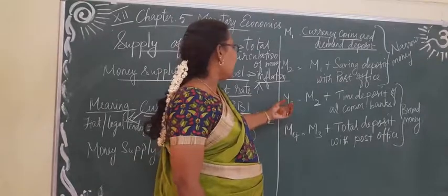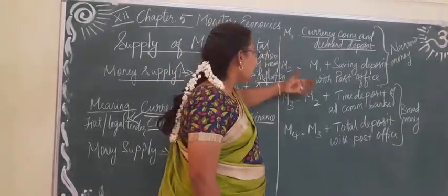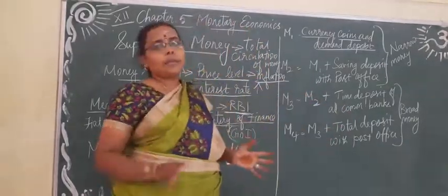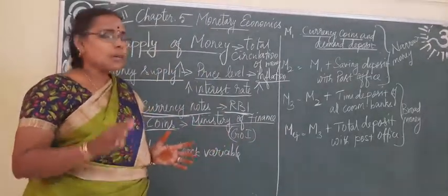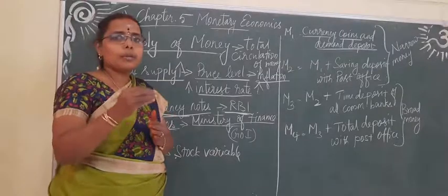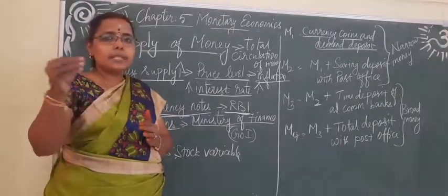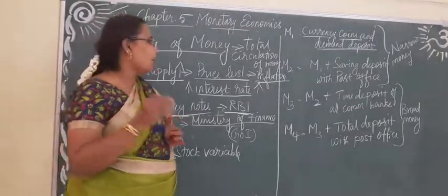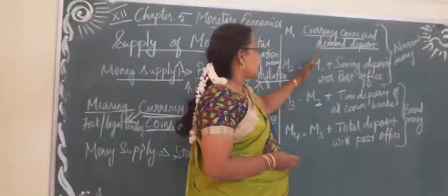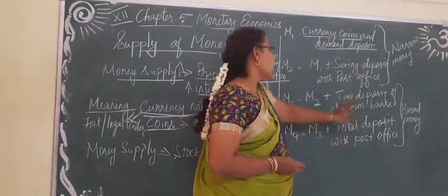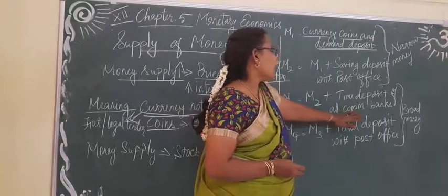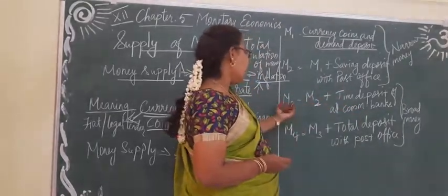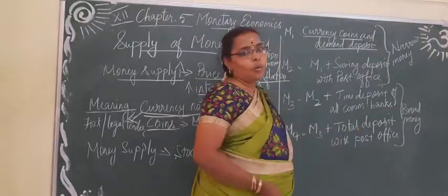M3 includes M2 — meaning both M1 and M2 are included in M3 — plus time deposits of all commercial banks. Time deposits are nothing but fixed deposits, where money is deposited for a particular period such as 2 years, 3 years, 5 years, or 10 years. So all the fixed deposit amounts, saving bank deposits, and post office deposits are included in M3.